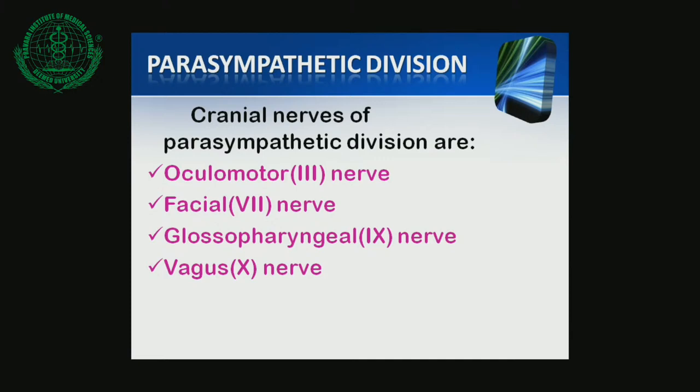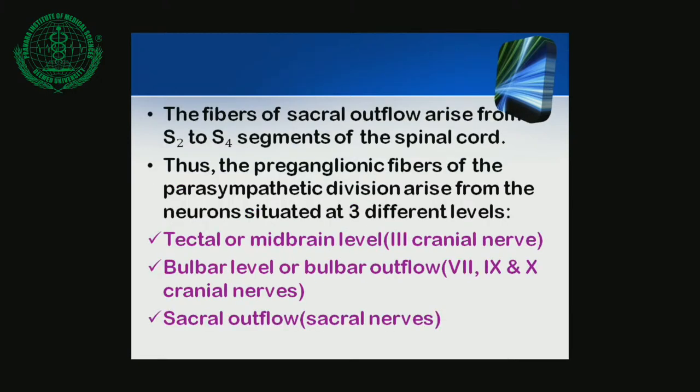The bulbar outflow includes the seventh, ninth, and tenth cranial nerves. The fibers of the sacral outflow arise from the S2 to S4 segments. The three levels are: tectal or midbrain level (third cranial nerve), bulbar level (seventh, ninth, and tenth cranial nerves), and sacral outflow.